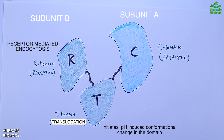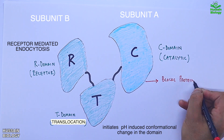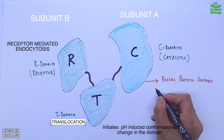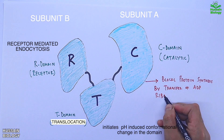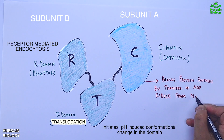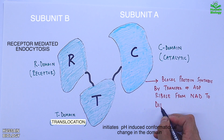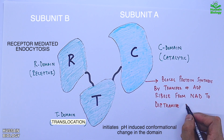Finally, the C domain blocks protein synthesis by transferring ADP-ribose from NAD to the diphthamide residue of elongation factor 2 (EF-2).